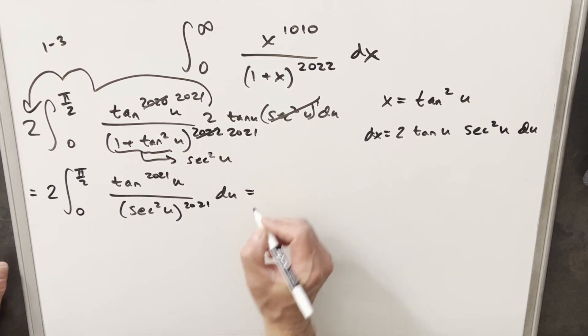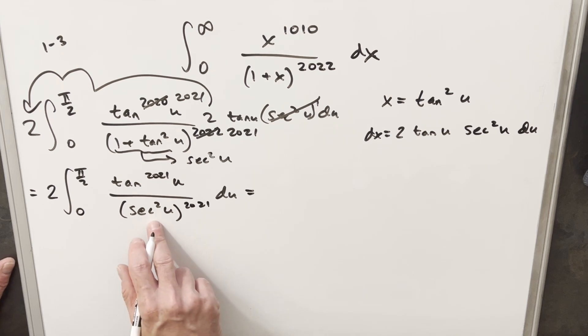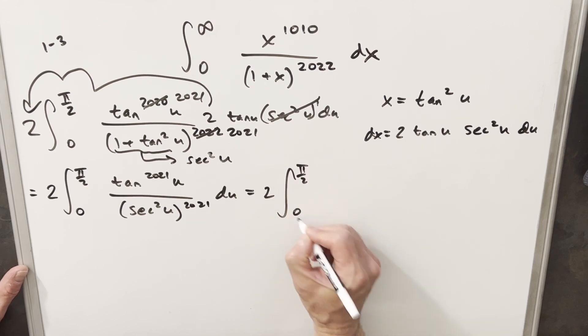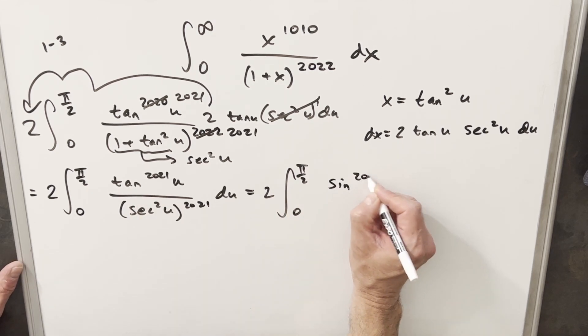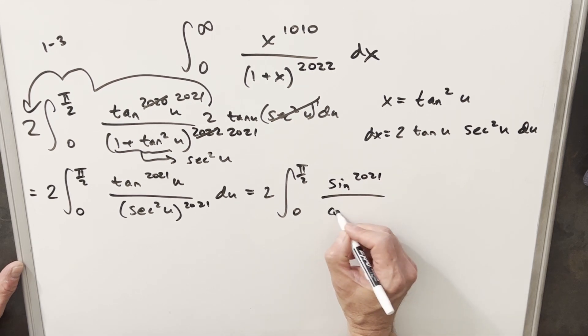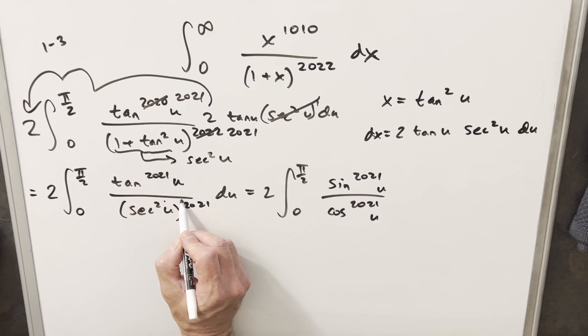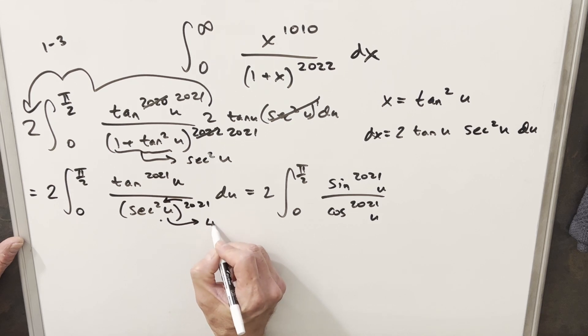Okay, now from here for my next step, what I want to do is turn this back into sines and cosines to give us a little better feel for what's happening. So we'll have our two same bounds. Our tangent we'll write as sine 2021 over cosine 2021. And what I can do with exponent rules is multiply in this 2021. So the power on the secant is actually going to be 4042.